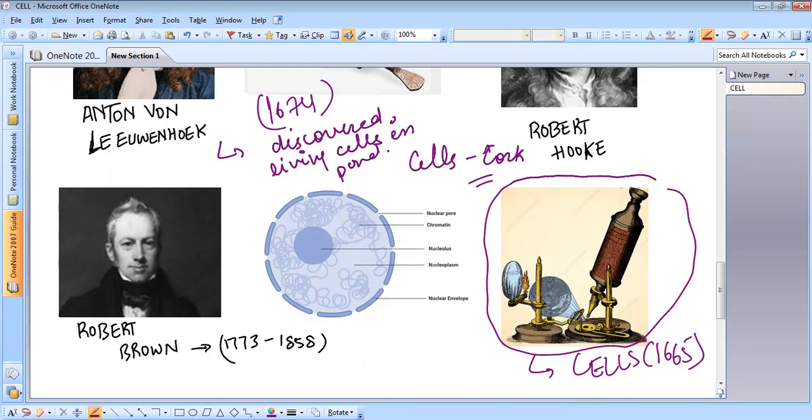Robert Brown, a Scottish botanist. In 1831, he discovered and named the nucleus. This is a nucleus. These are nuclear pores. This is the nucleolus. And these are chromatin fibers. So, this is a structure of a nucleus. And Robert Brown, in 1831, discovered and named the nucleus in plant cells.